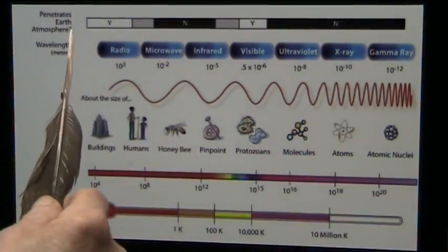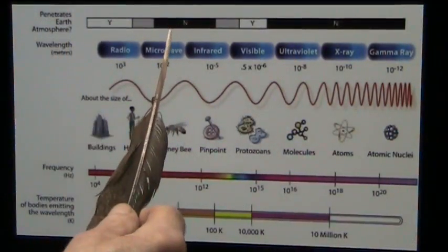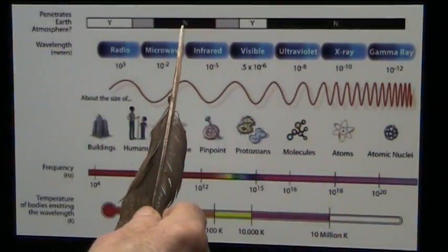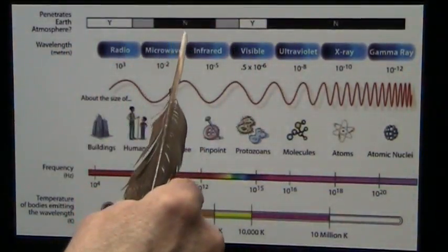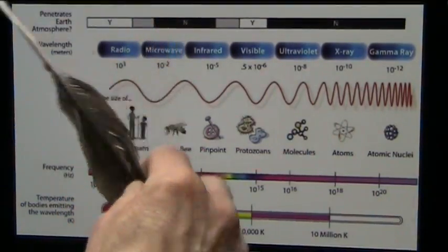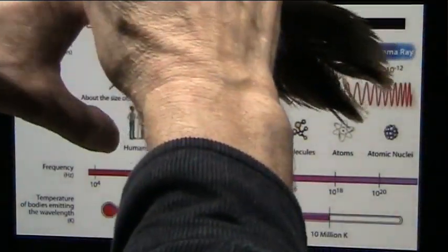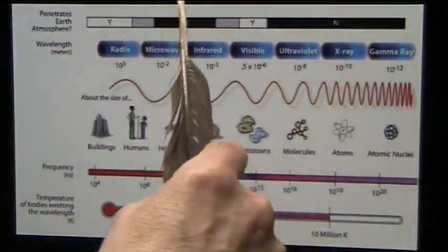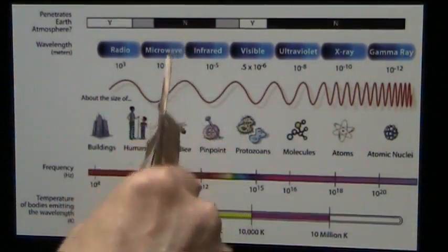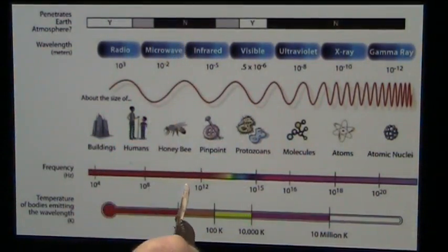How come it doesn't come through the atmosphere? Why can't you come through? Penetrates Earth's atmosphere. No, you cannot. Why don't you penetrate? Because you hit molecules of oxygen and hydrogen and water, which is way out in the outer atmosphere, and it stops you. Because if you got all the way down to Earth, you would be splitting the water molecules down here.